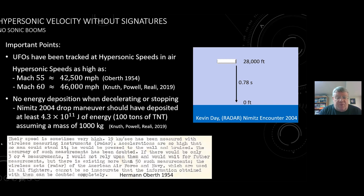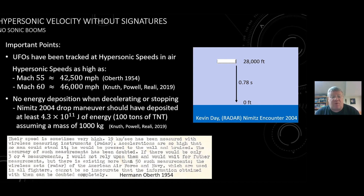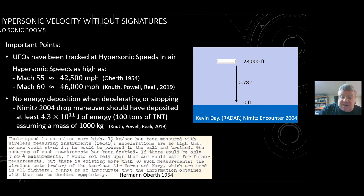Here's a clip from Hermann Oberth's 1954 presentation where he notes high speeds: '19 kilometers per second has been measured with radar. Accelerations are so high that no man could stand it.' He says he would be pressed to the wall and bruised — actually turned to gel, in the case of the Tic Tac. He also states there are more than 50 such measurements, and that Air Force and Navy radar cannot be so inaccurate that the information obtained can be doubted completely.